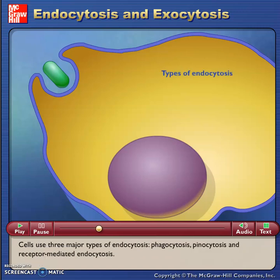Cells use three major types of endocytosis: phagocytosis, pinocytosis, and receptor-mediated endocytosis.